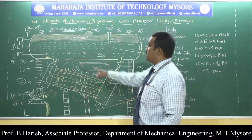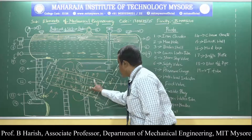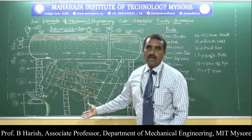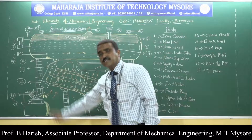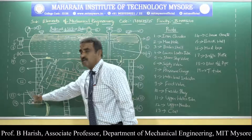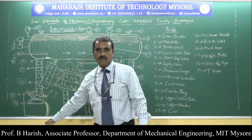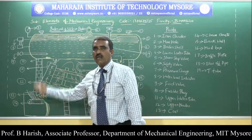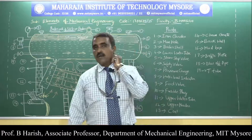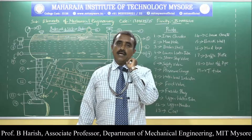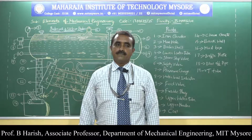Looking at the classification of the Babcock and Wilcox boiler: the boiler shell is horizontal, so it is a horizontal boiler. Water is circulated inside the tubes, so it is a water tube boiler. It is fixed on the wall, so it is a stationary boiler. Firing is done outside the boiler shell, so it is externally fired. This boiler is used in power generation where high pressure steam is generated and fluctuations in steam demand must be handled, as in thermal power plants.